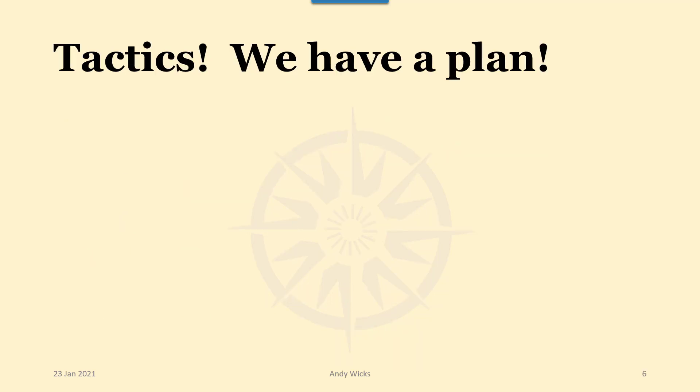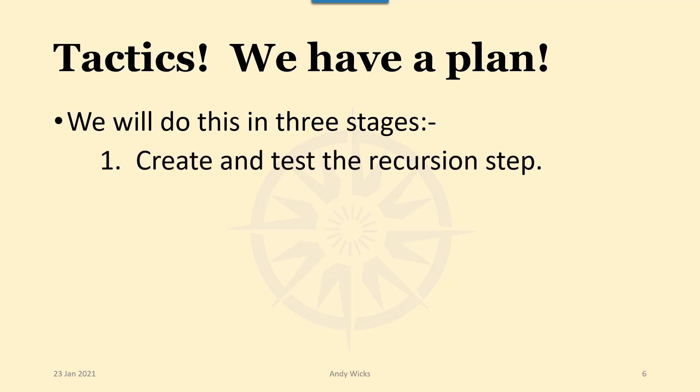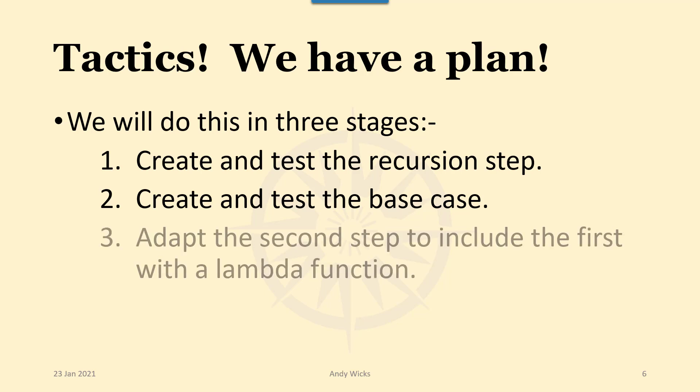So we have to have a plan. With functional programming, no plan means you're going around in that endless loop. So we'll do this in three stages. First of all, we're going to create and test the recursion step. Second, we're going to create and test the base case. And then finally, we're going to adapt the second step to include the first one with a lambda function.